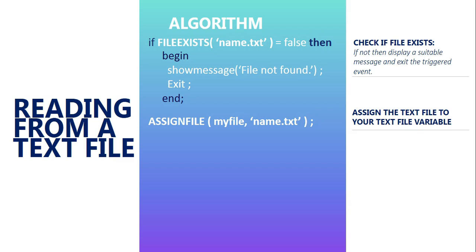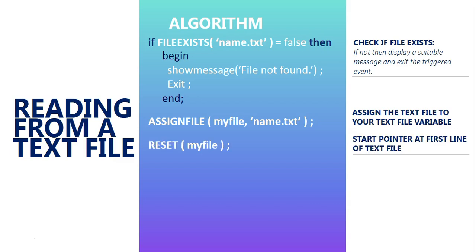Step four: we need to move what's called a pointer. A pointer tells us where in the text file we are working — are we at the top, the second line, the fourth line? We want to move that pointer to the very first line, so we use Reset on the text file variable. This starts the pointer at the first line of the text file so we know we are right at the top.